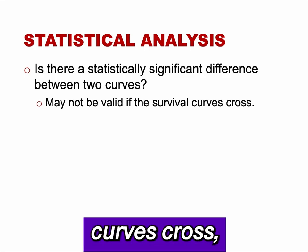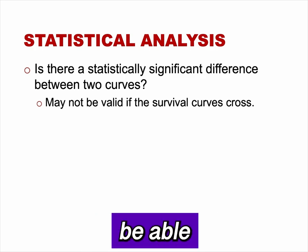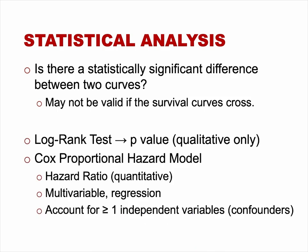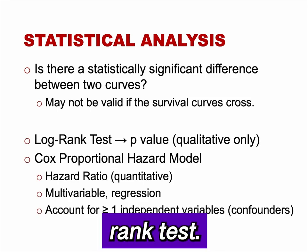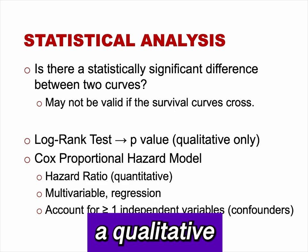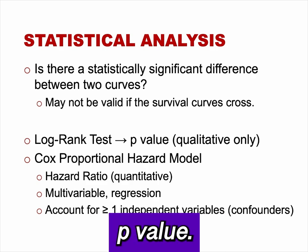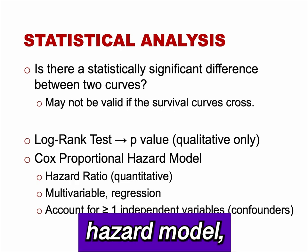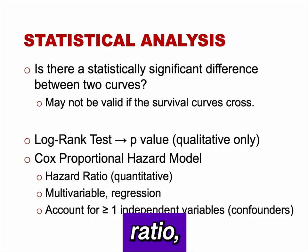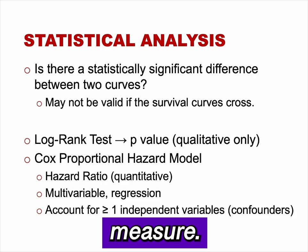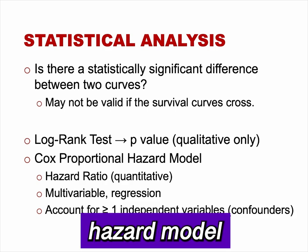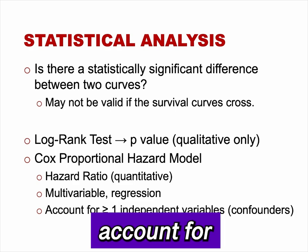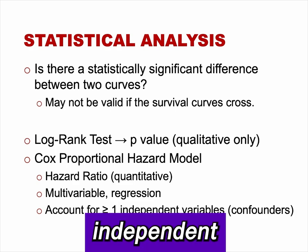There are statistical tests that can be used to determine if there is a statistically significant difference between the two curves. However, if the survival curves cross, these tests may not be able to detect a difference between the groups when one exists. The tests include the log rank test, which is a qualitative test that provides only a p-value. The other test is the Cox proportional hazard model, which results in a hazard ratio — a quantitative measure. The Cox proportional hazard model is an example of a multivariable regression analysis and can account for the effects of more than one independent variable.